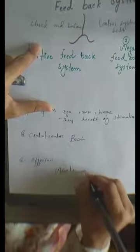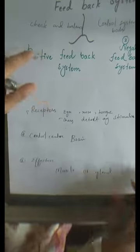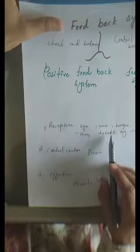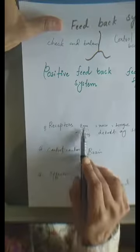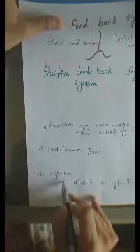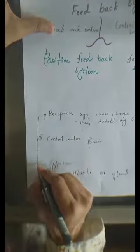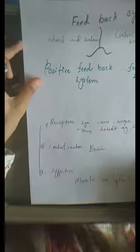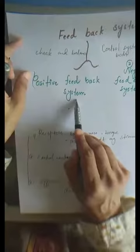From the brain, the message goes to effectors. Effectors are any muscle or gland. For example, if you see a dangerous animal, your eyes detect it, the message goes to your brain, and then your brain sends a message to the effectors — your legs move to get away from that area. These three things — receptors, control center, and effectors — work together to control and protect the body.